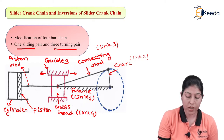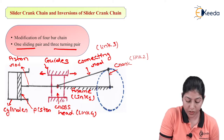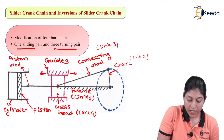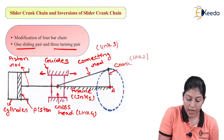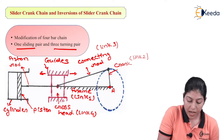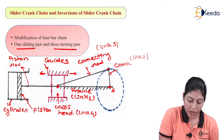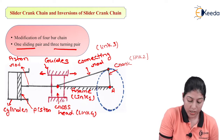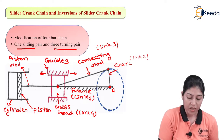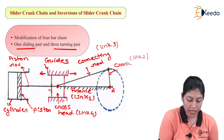Slider crank chain mechanism is the modification of 4-bar chain mechanism where we consider 4 number of links forming 3 turning pairs and 1 sliding pair. Here we consider link 1 as the frame which is fixed, link 2 is the crank, link 3 is the connecting rod, and the connecting rod is connected with the cross head. This cross head is moving between the guides, and it is connected with the piston rod, which is connected with the piston moving inside the cylinder.